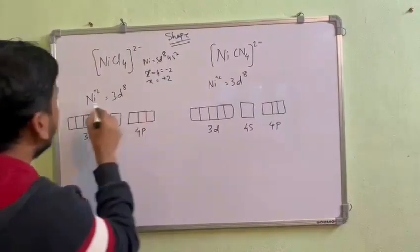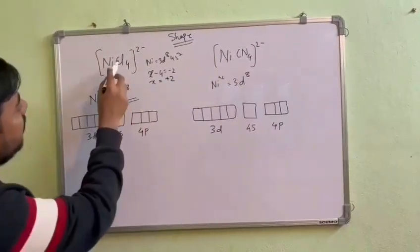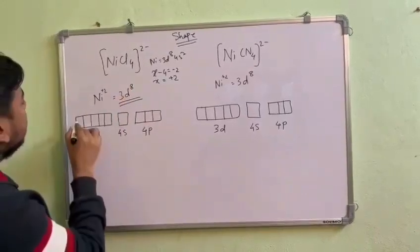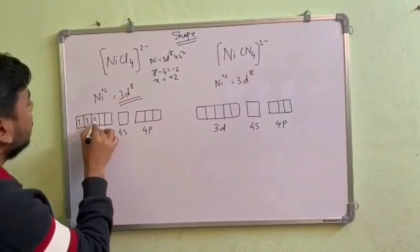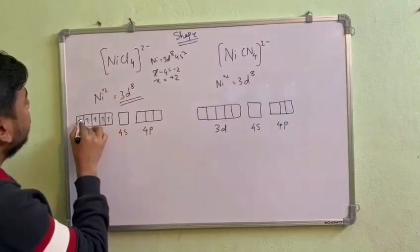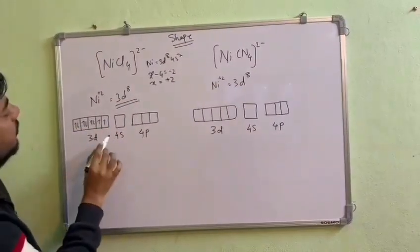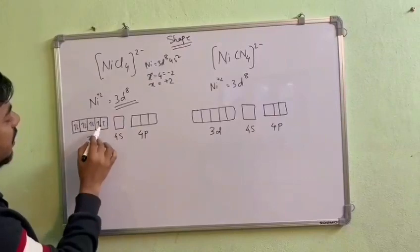Since it is a weak ligand, there is no pairing in this case. One, two, three, four, five, six, seven, eight - eight electrons will fill this way. And this electron is not going to jump here since chloride is a weak ligand.